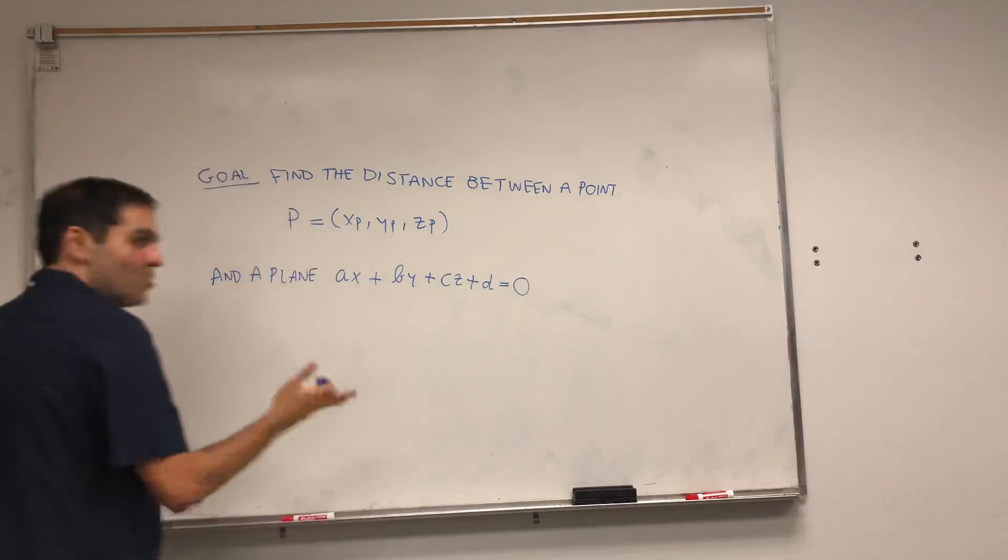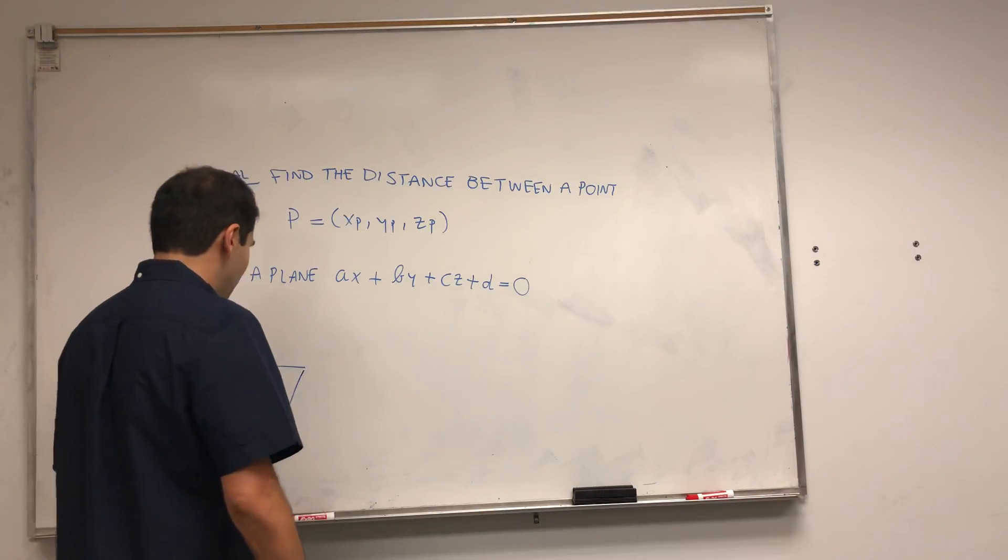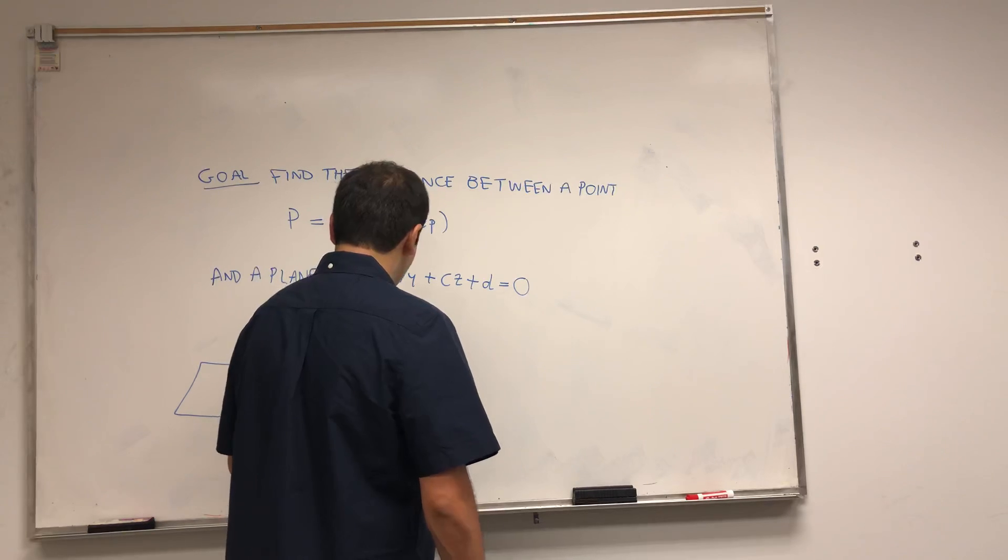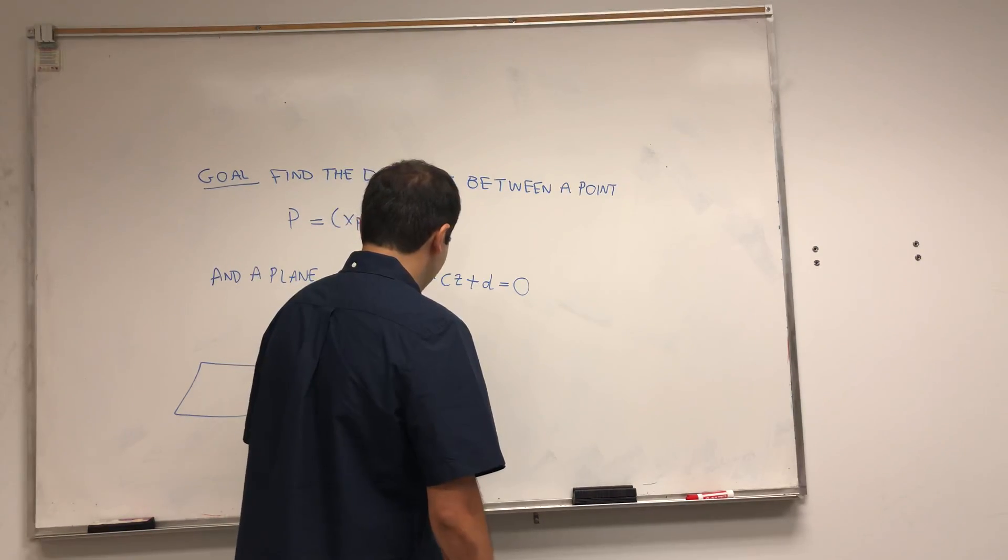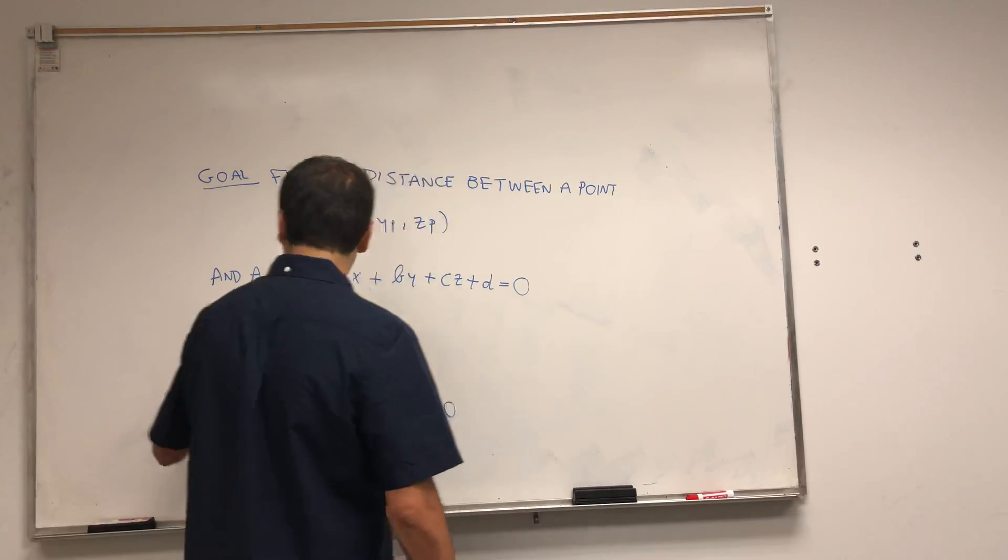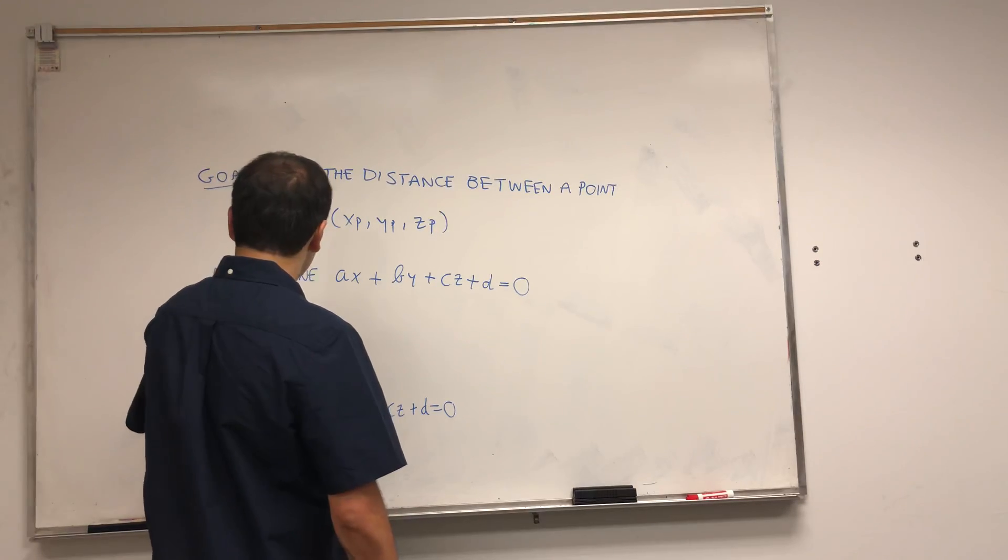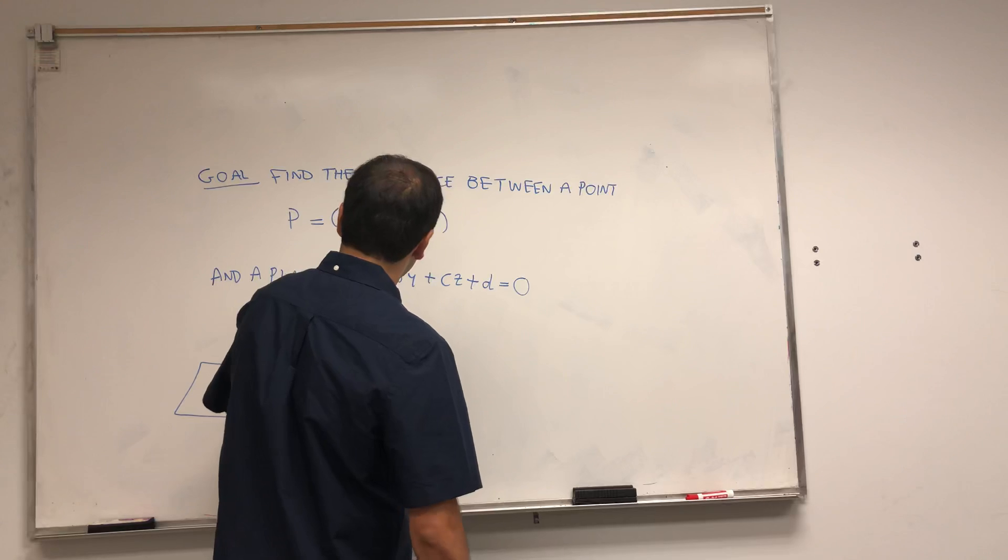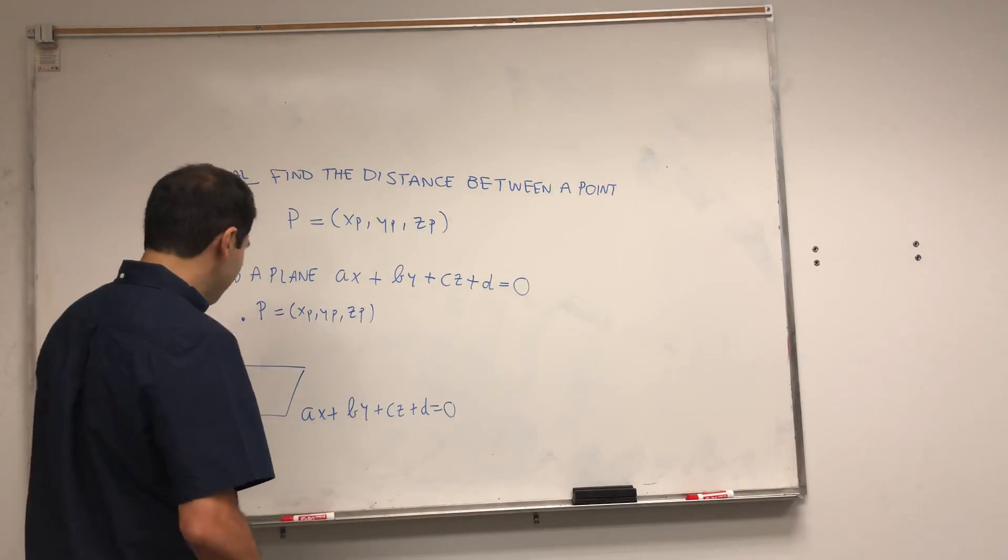Let me draw a picture. Here you have the plane Ax + By + Cz + D = 0, and you have this point P here, which is (xp, yp, zp). What you want to find is this distance.